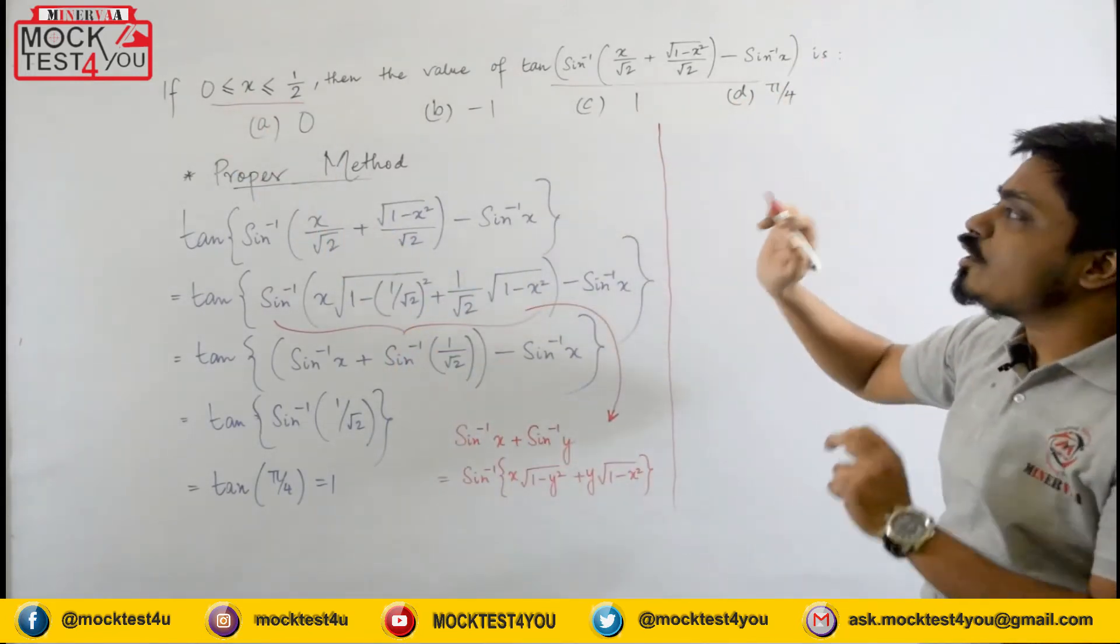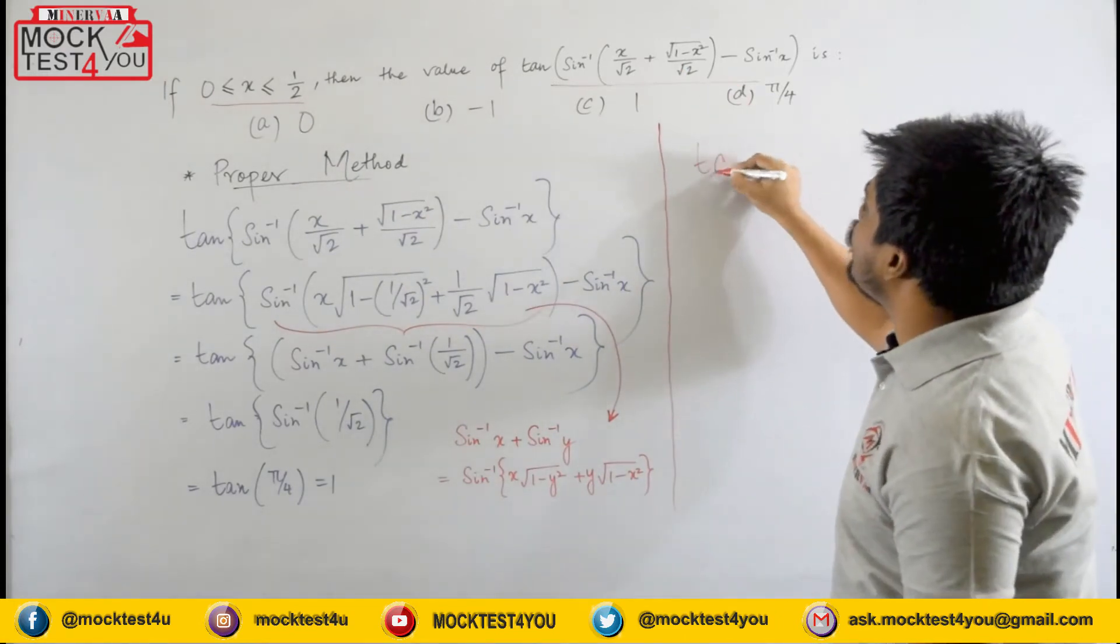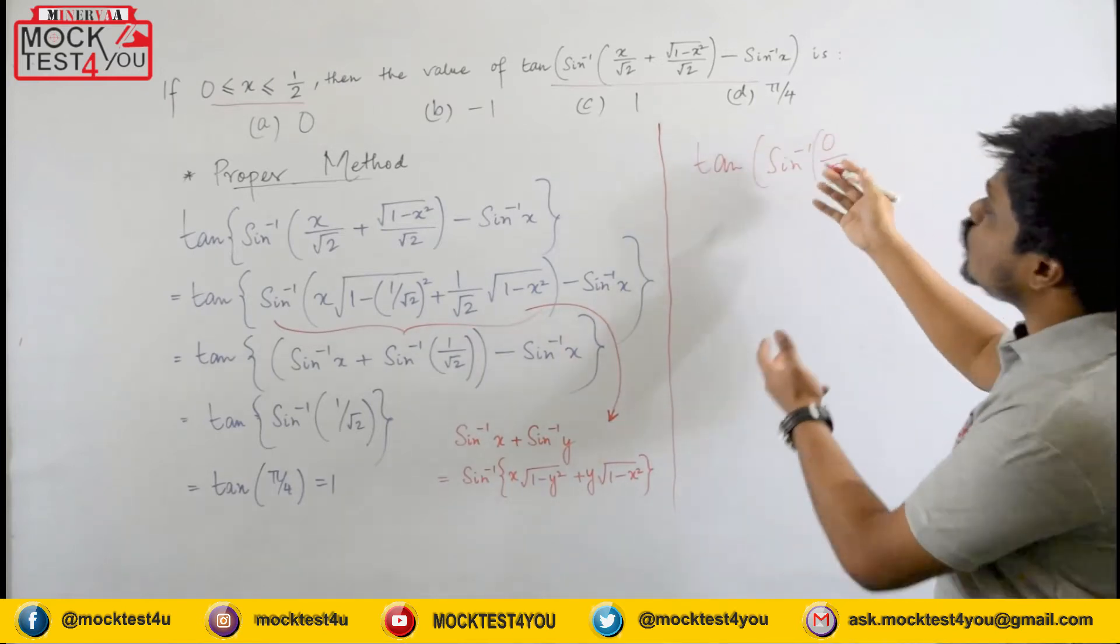So without looking at the question we directly do what? In place of x I will put 0. So what do we see here? We have tan of sine inverse 0 by root 2 and that becomes what?